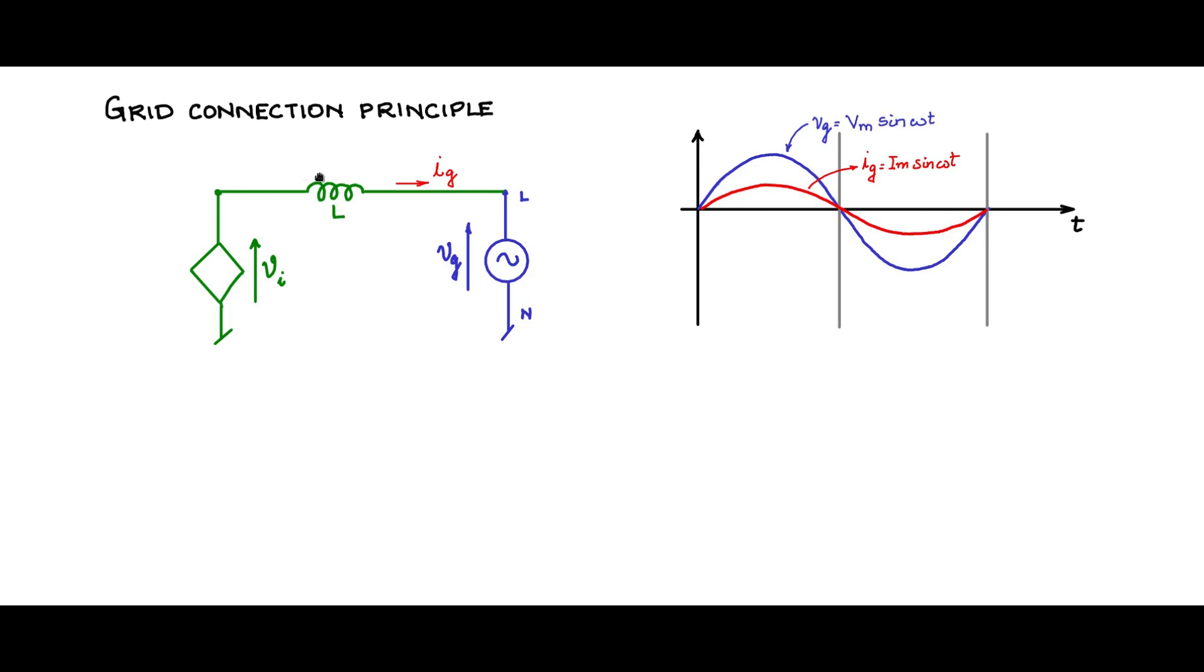Now let me consider the voltage across the inductor. I will measure it in this fashion and call it VL. Let us look at this loop and write down the voltage equation: VG plus VL should be equal to VI. VI is the voltage coming out of the inverter.